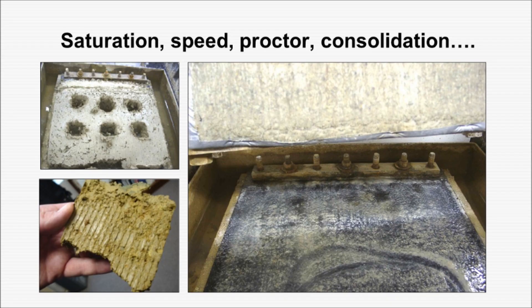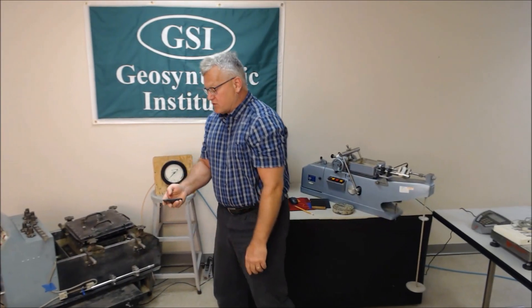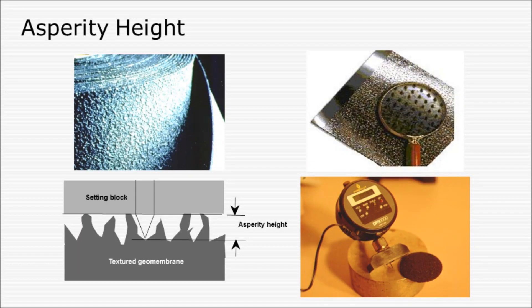All these tools are used in geotechnical engineering and certainly used with this device afterwards to verify the soil. You sometimes will also have to characterize the materials used. The most important one seems to be asperity height, where you're using a depth gauge to verify the different texturing or asperity height of the material.